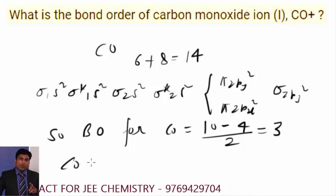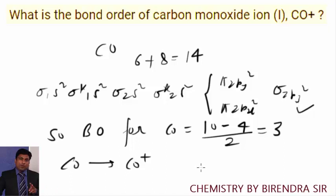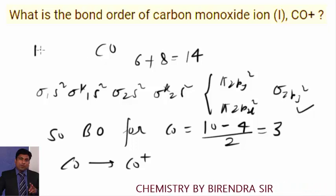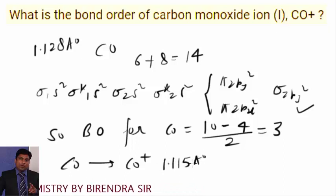Now when CO is ionized to CO plus by removal of 1 electron from sigma 2pz, bond order should be reduced to 2.5 and bond length should be increased. But the fact is bond length of CO is 1.128 angstrom and that of CO plus is 1.115 angstrom.